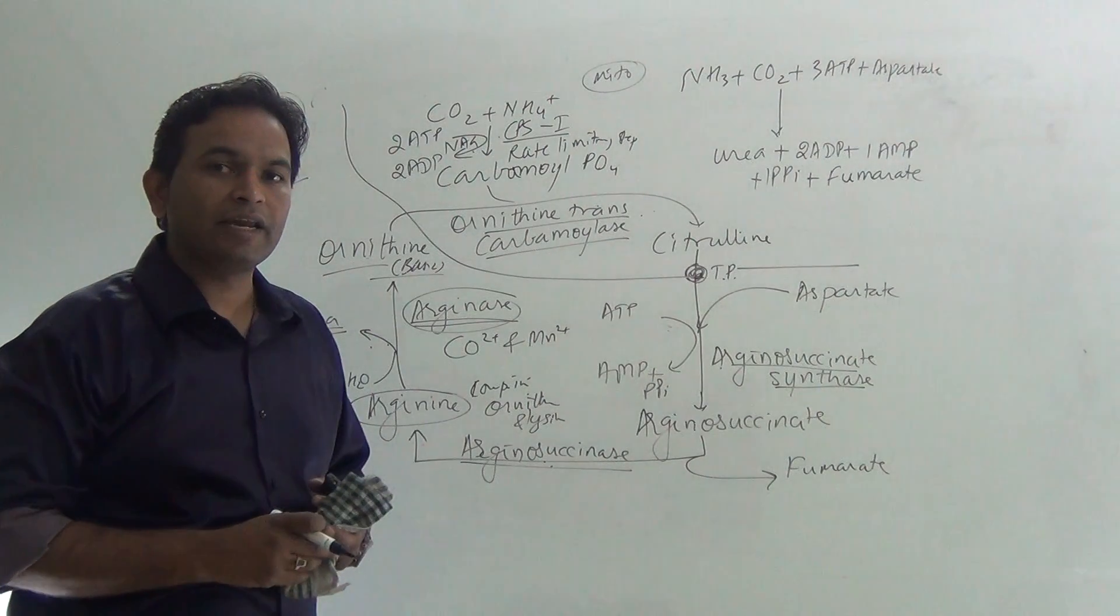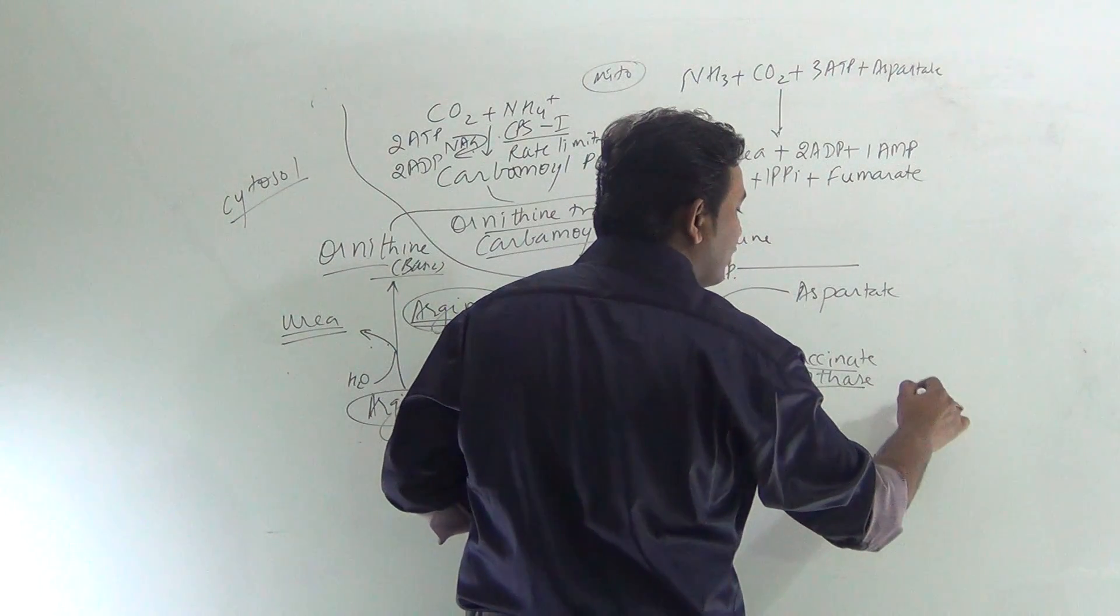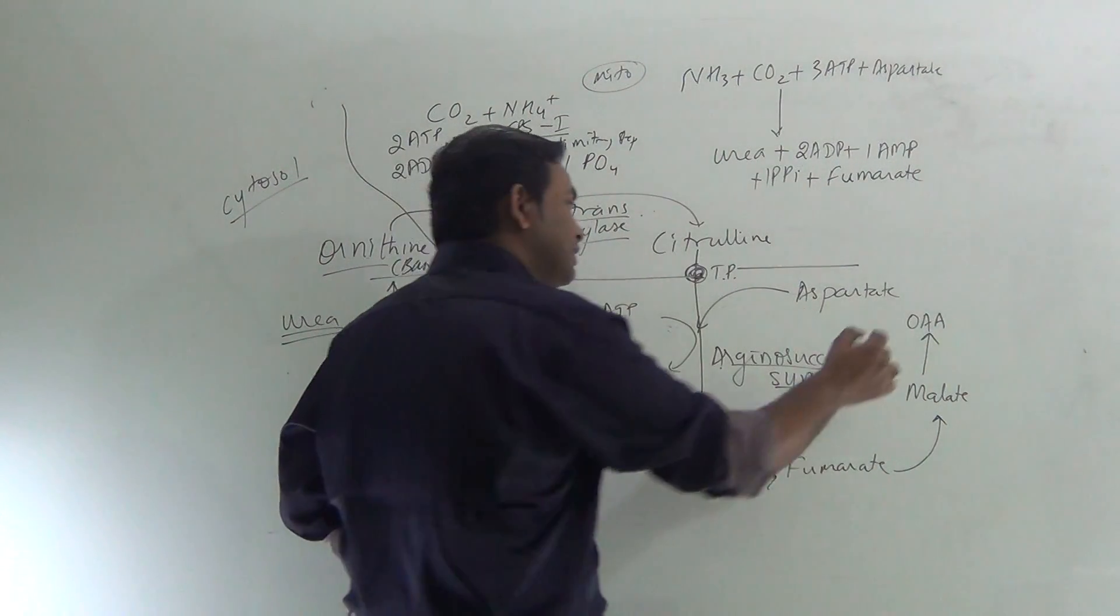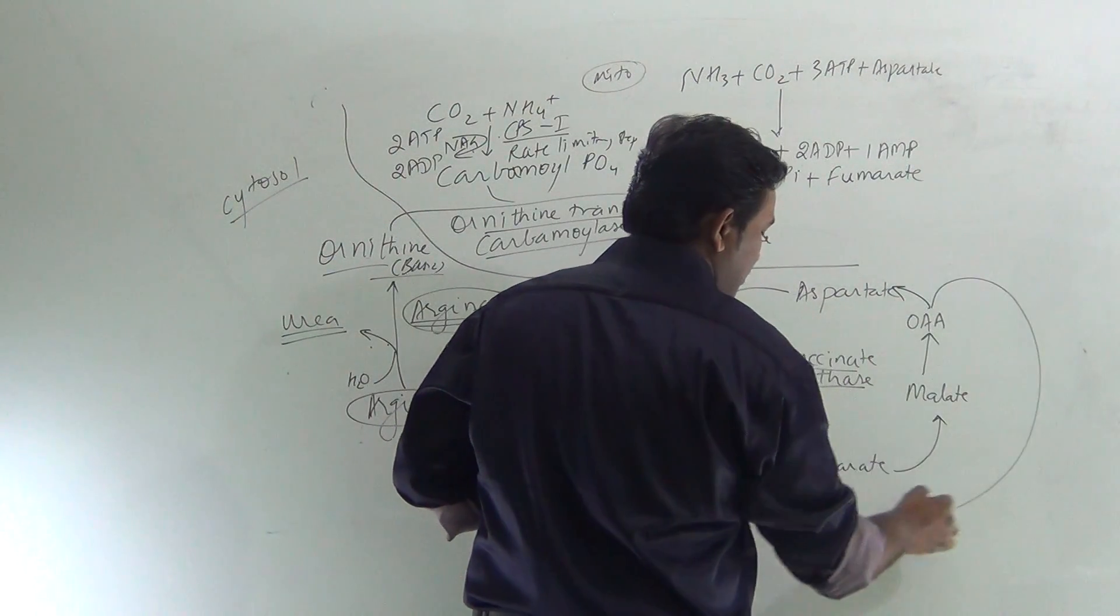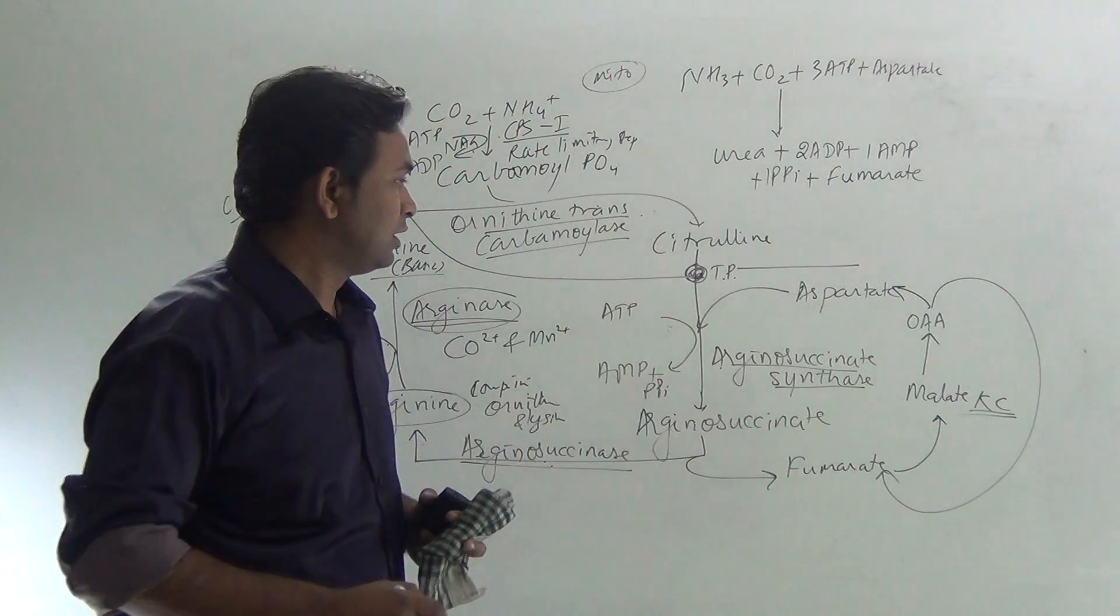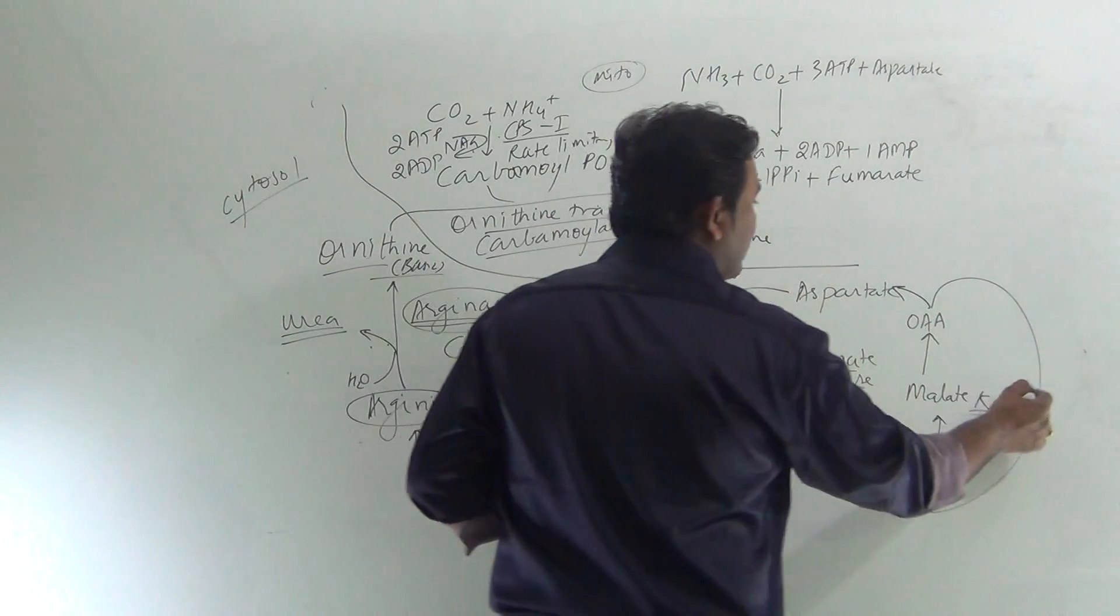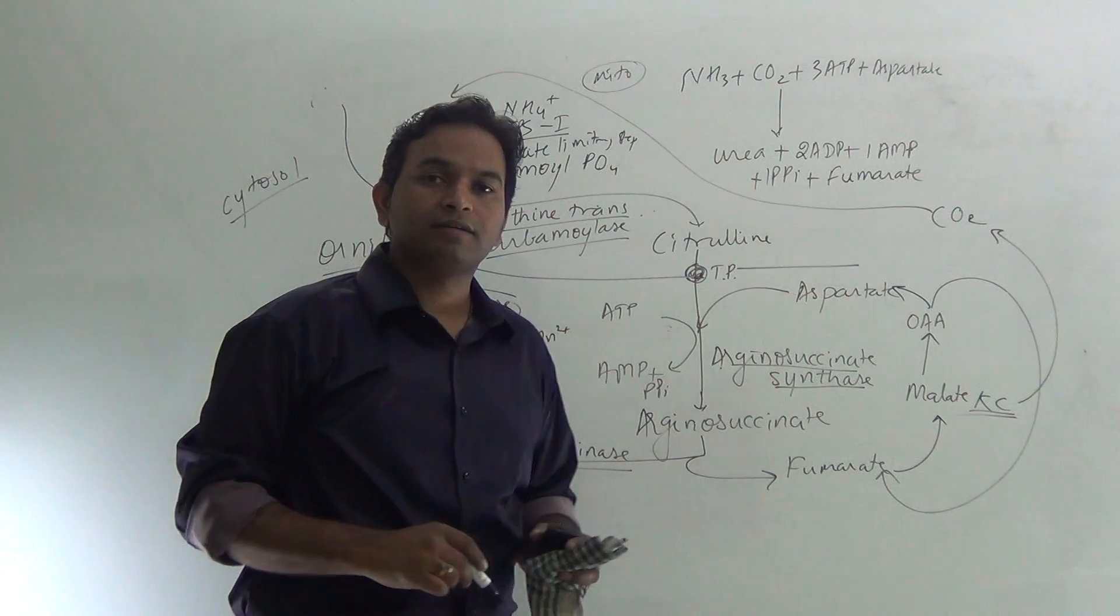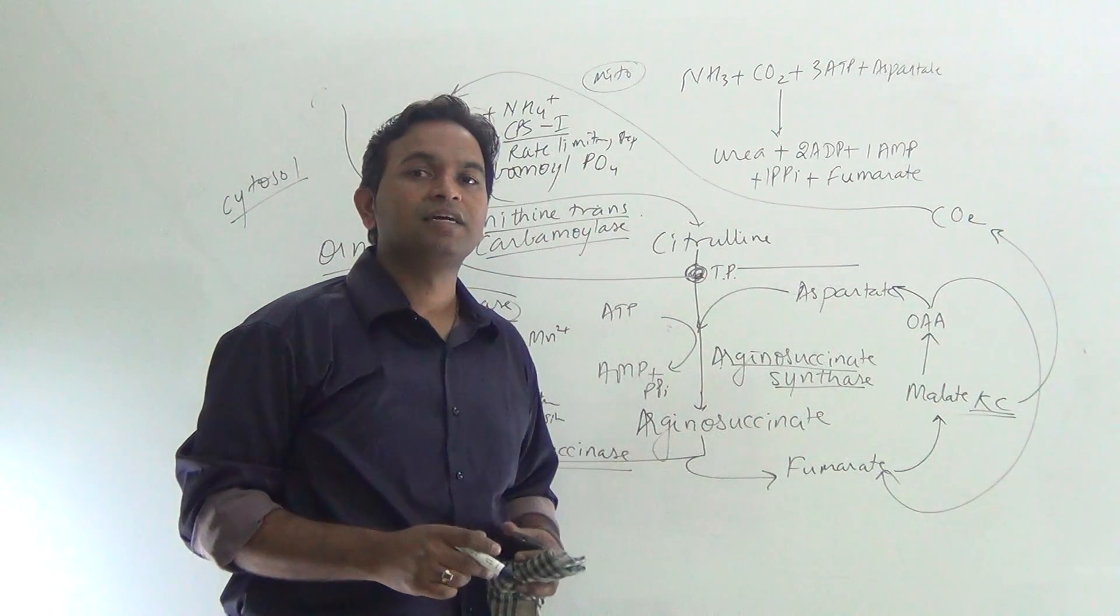Urea cycle can also be linked with Krebs cycle. This fumarate is converted to malate. Malate is converted to oxaloacetate. This oxaloacetate is converted to aspartate. This is urea cycle connected with Krebs cycle. So this is Krebs-Henseleit cycle, this is Krebs cycle. Also, Krebs cycle results in the release of CO2, which enters the urea cycle. This is the bicyclic representation of Krebs cycle and Krebs-Henseleit cycle.